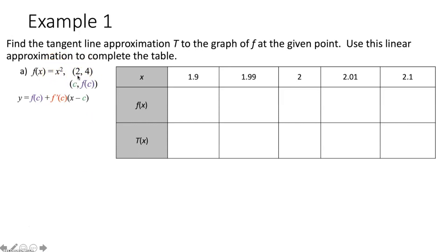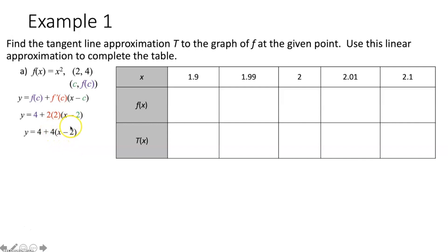Our point is c, f(c), so 2 goes in for c. f(2) = 4, so we plug in 4 for f(c). For f′(2): the derivative of x² is 2x, so f′(2) = 2(2) = 4. We distribute 4 to (x − 2), which gives 4x − 8, then add 4 to get 4x − 4. So our tangent line approximation for this function at (2, 4) is t(x) = 4x − 4.